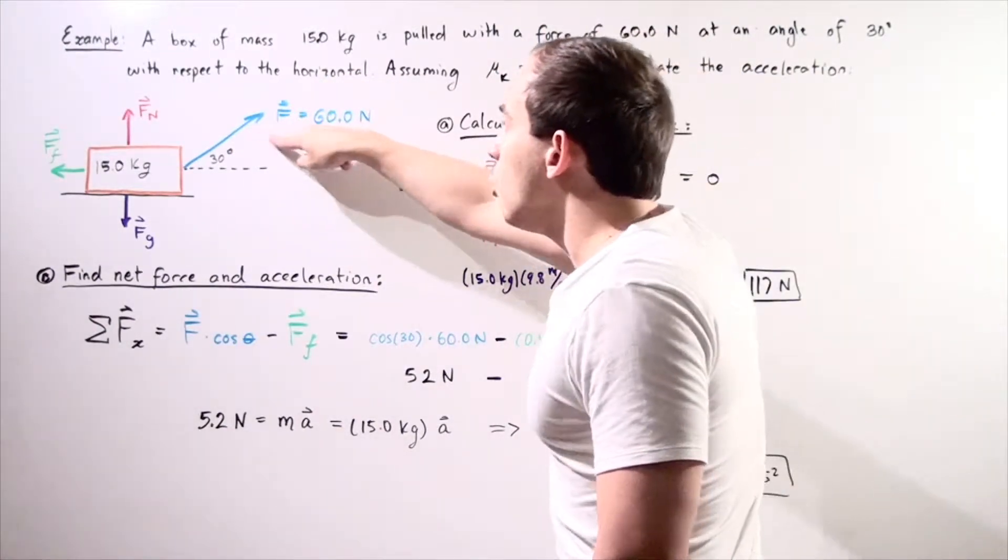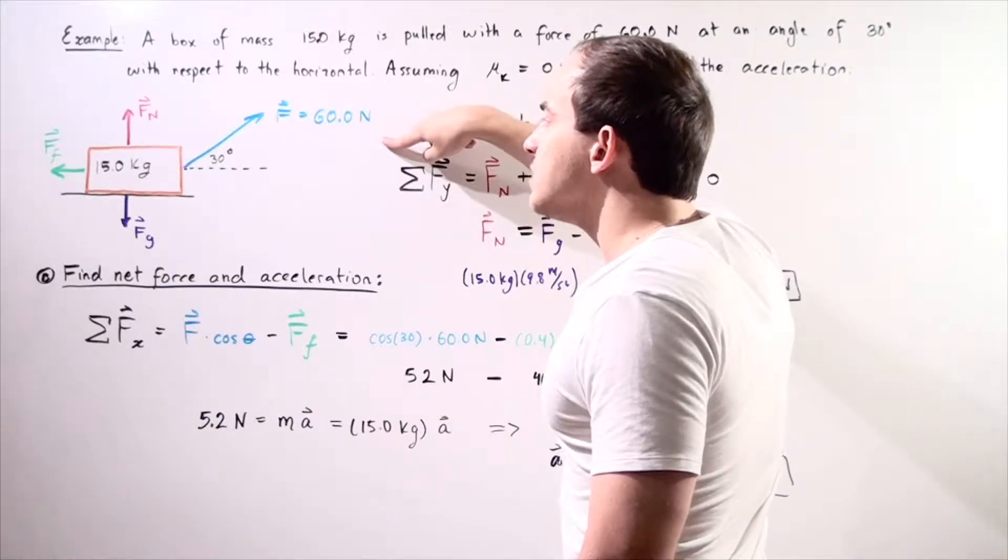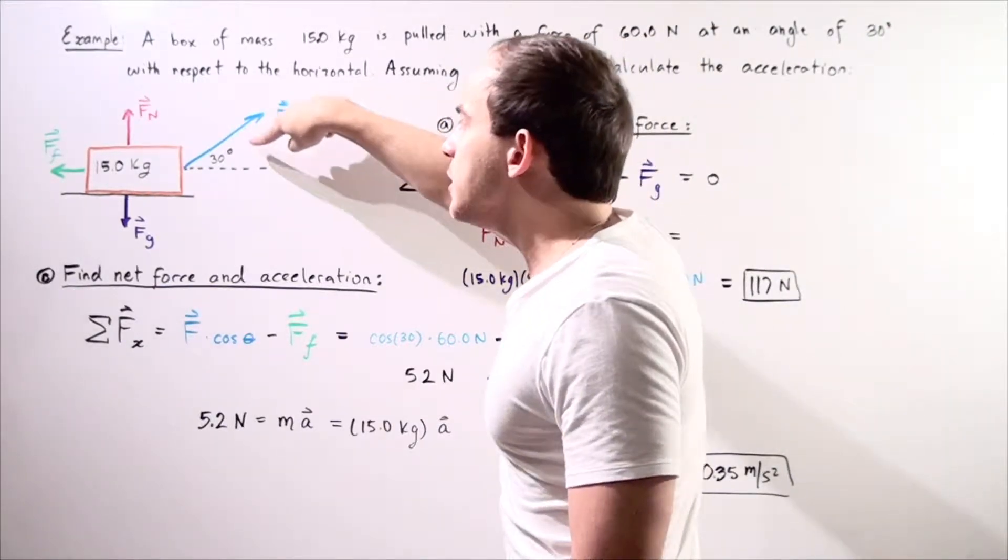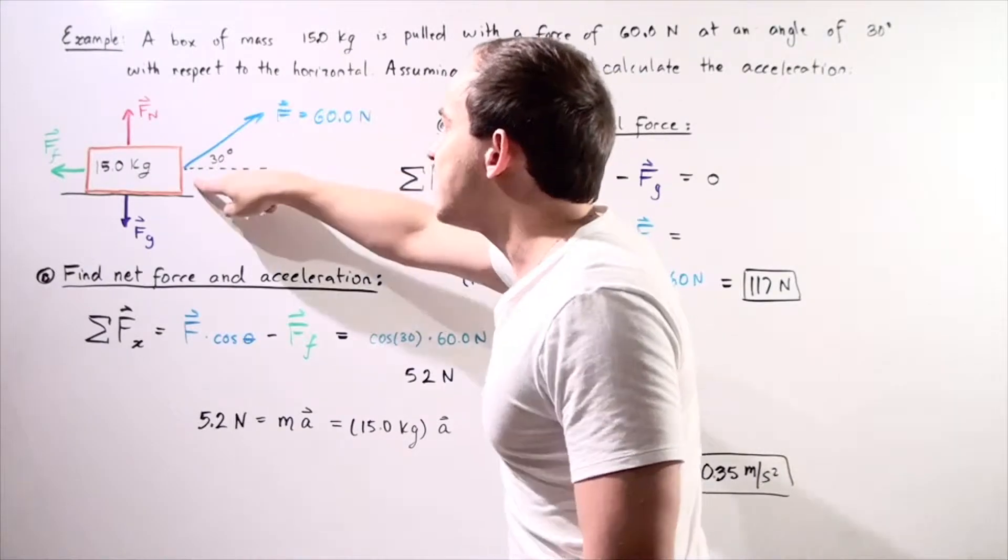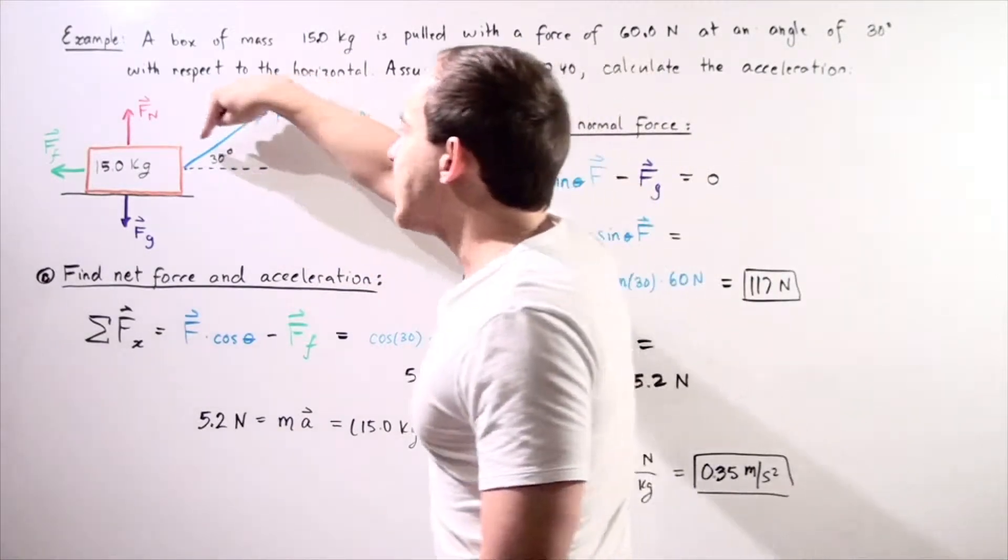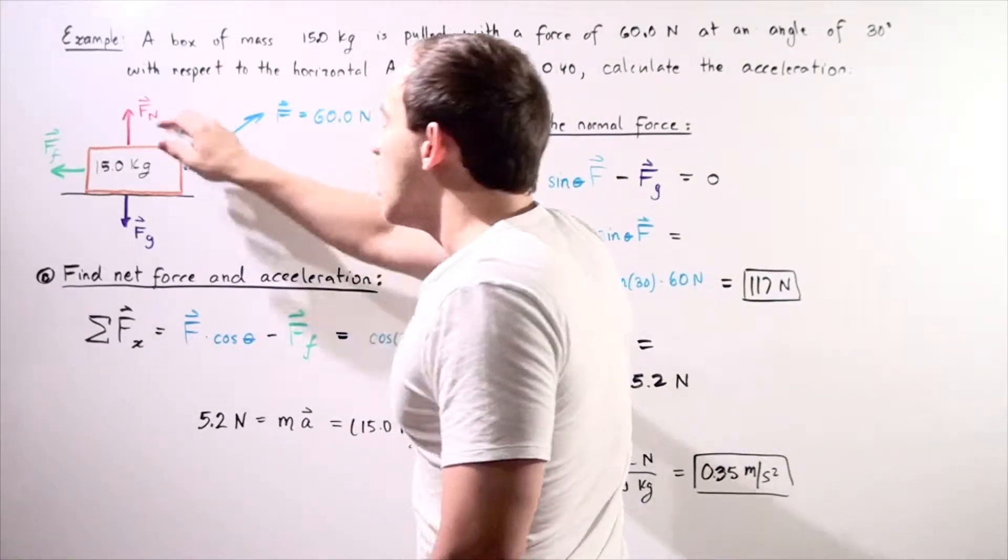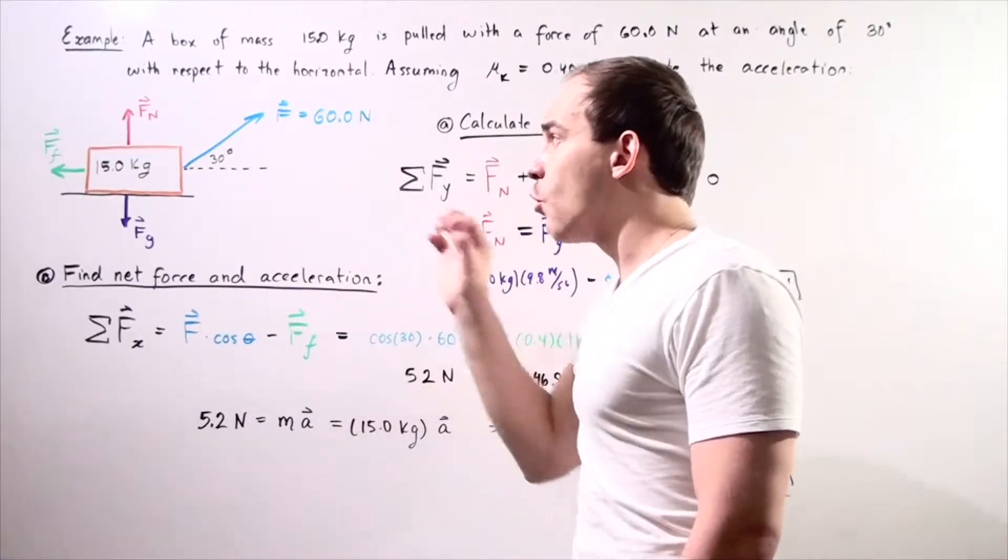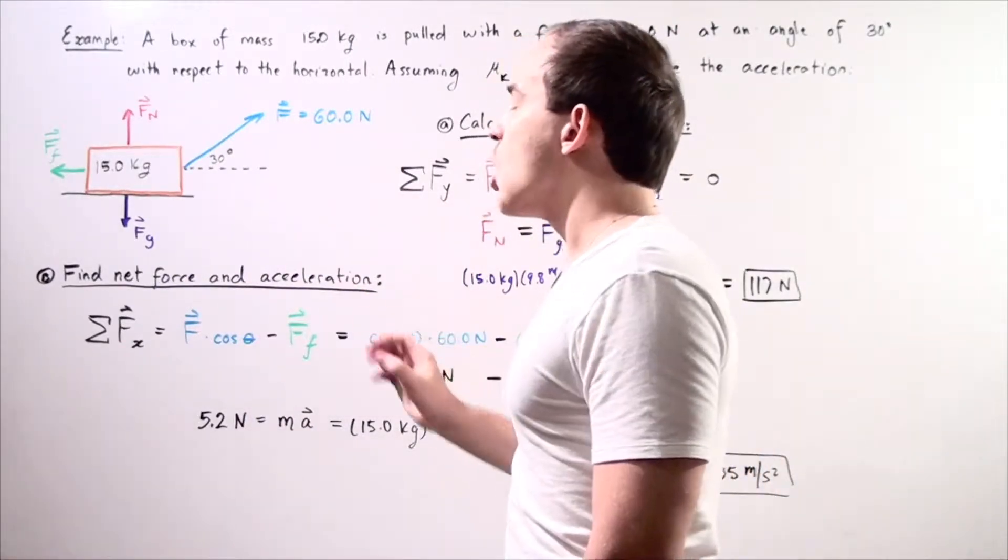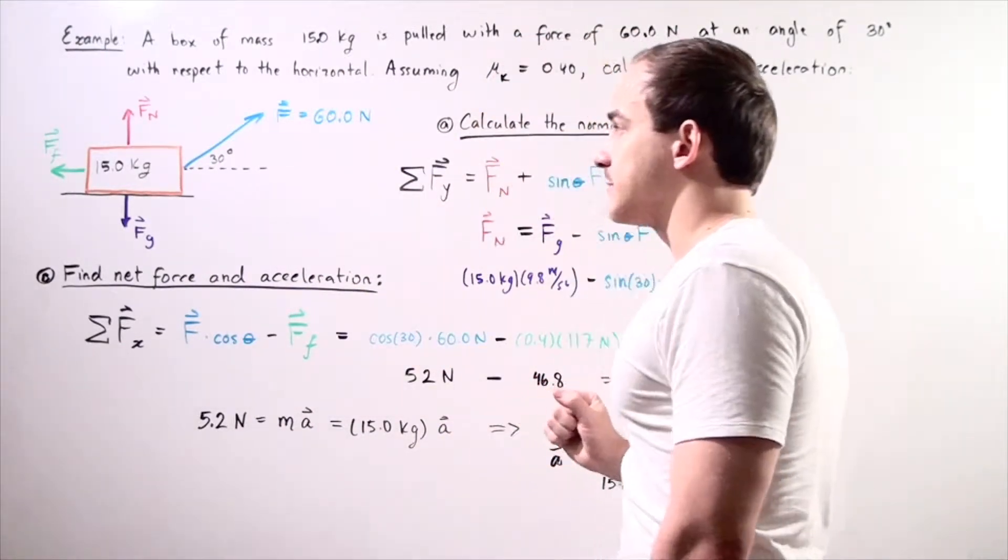Remember, we're pulling with a force of 60 newtons at an angle of 30 degrees, and that means this force will have an x component and a y component. We actually have three forces acting on the box along the y axis.